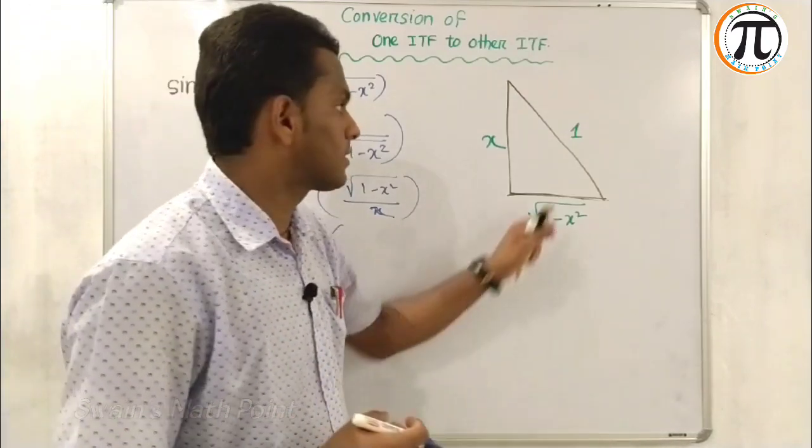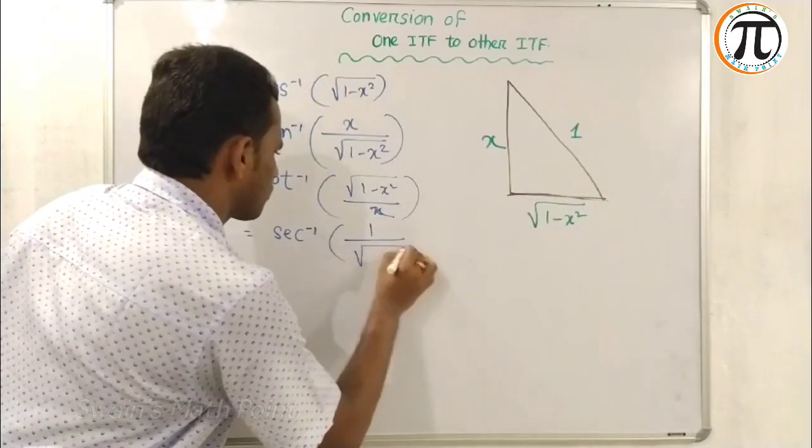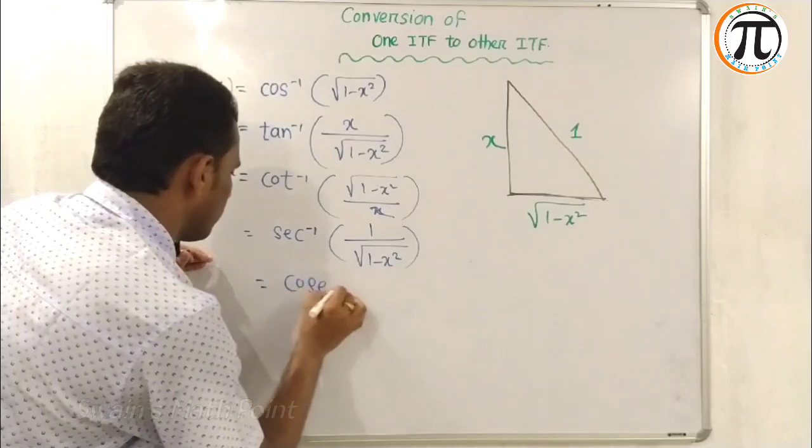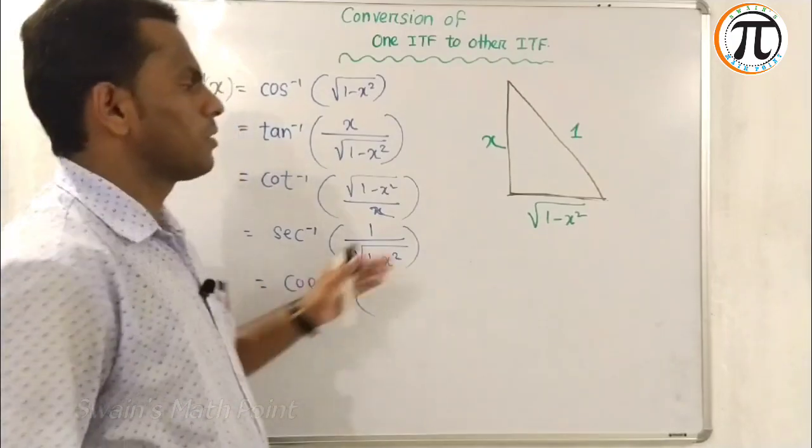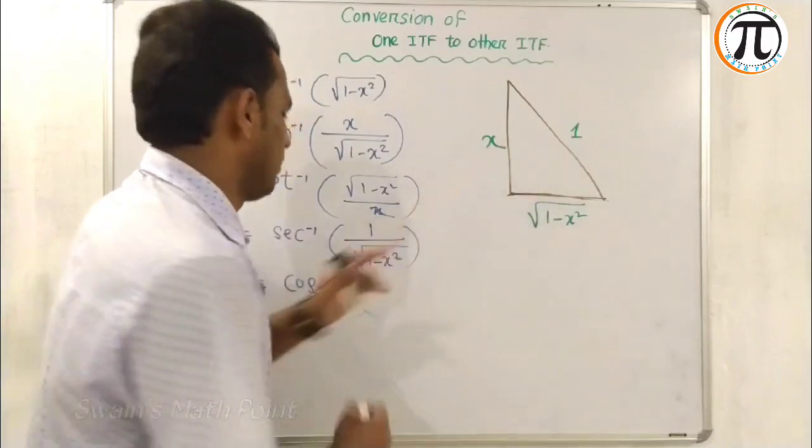If you want to convert to cotangent or secant, secant is H by B, which equals 1 by square root of 1 minus X squared. Or cosecant, which is H by P, equals 1 by X.